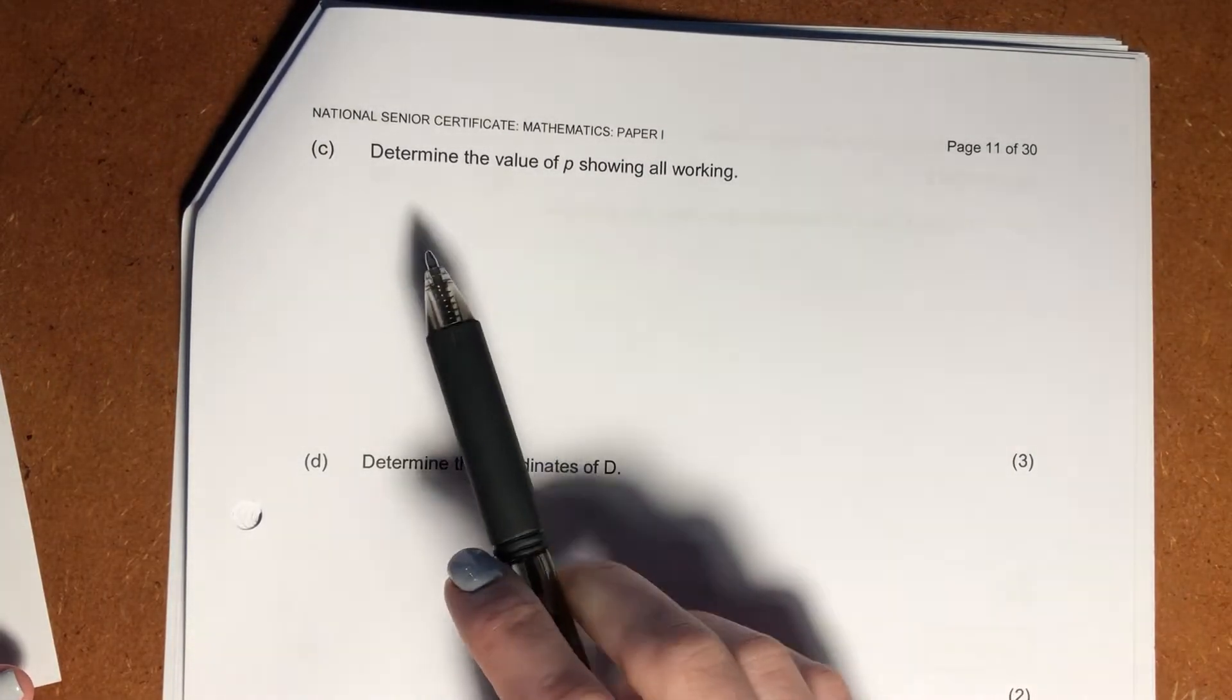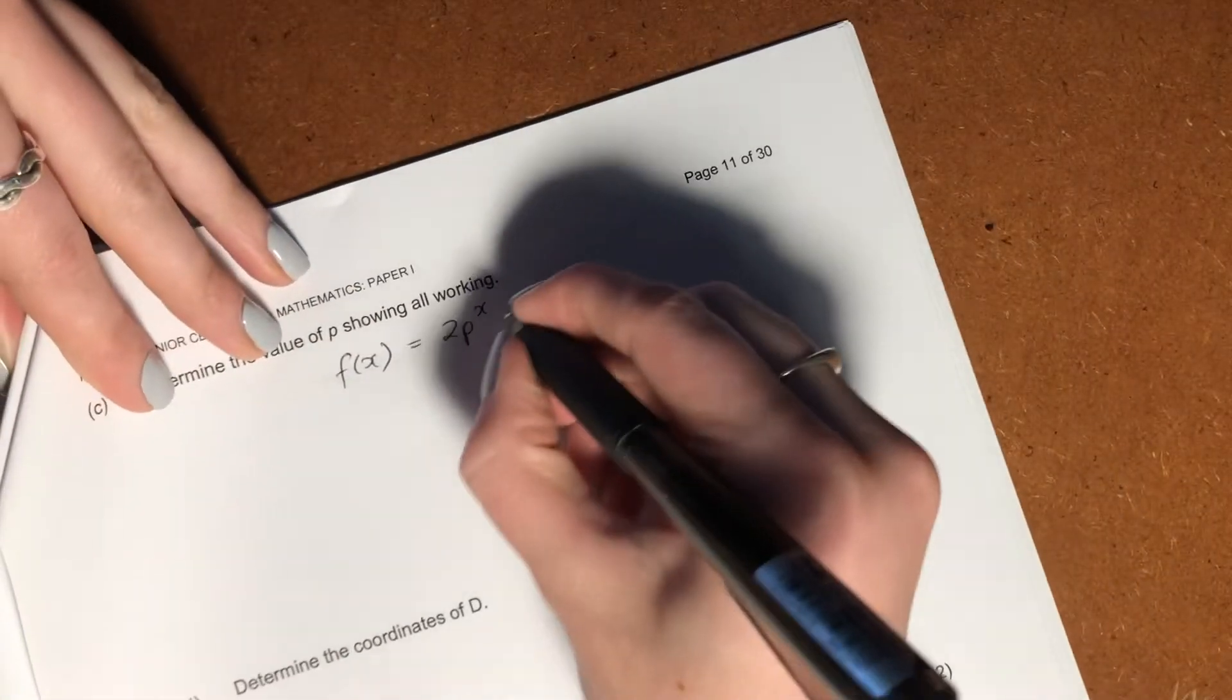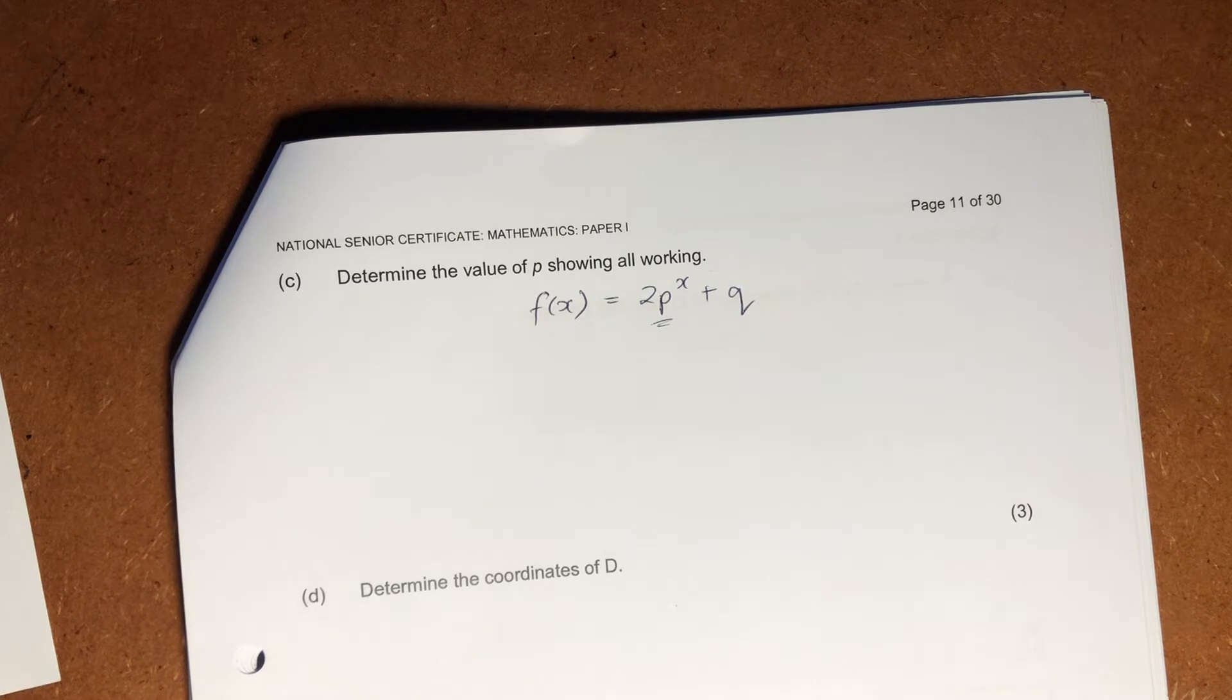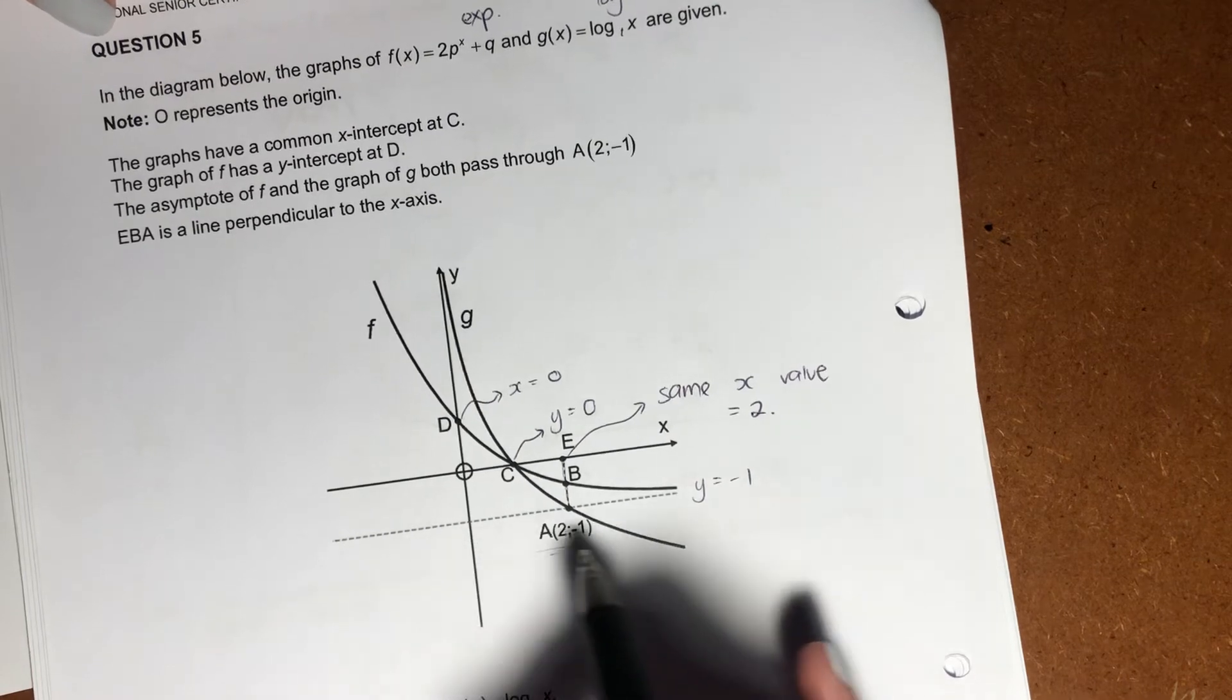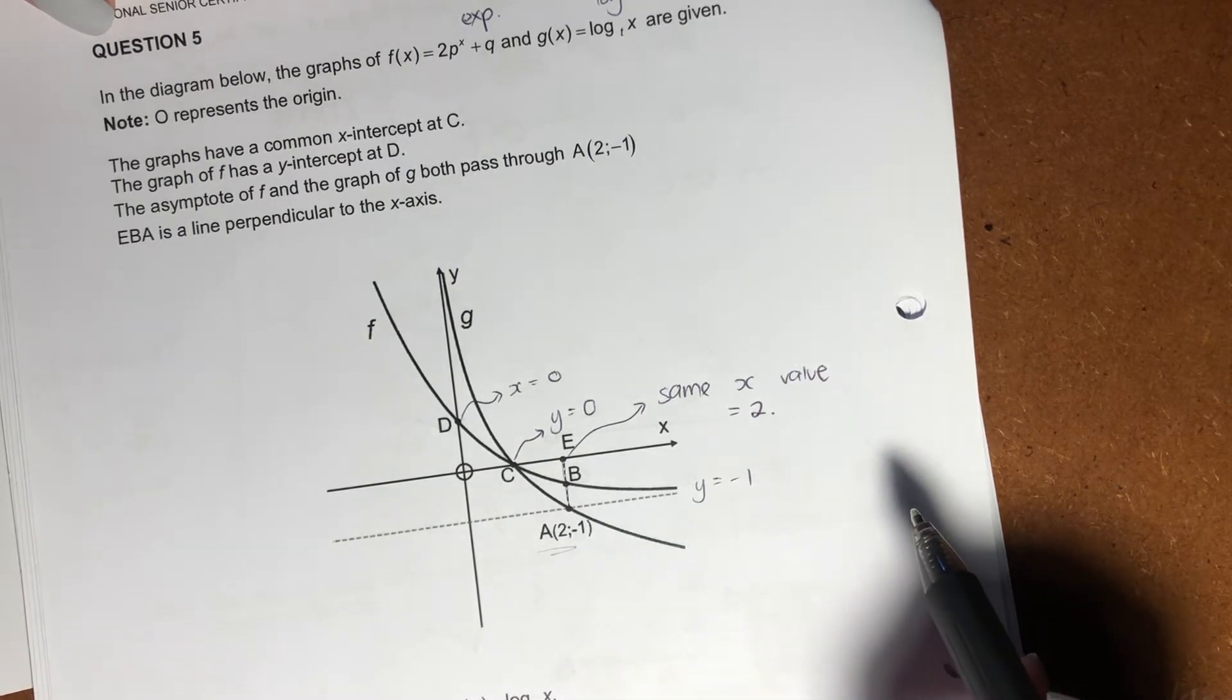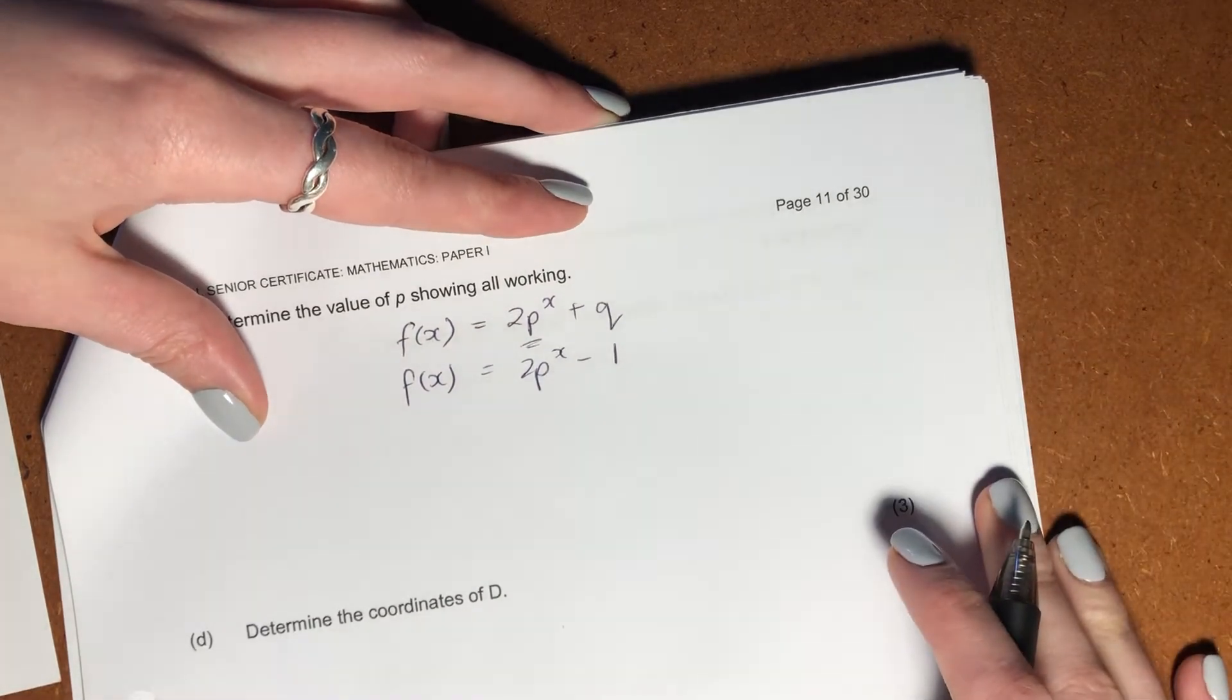So now, as expected, it says determine the value of p showing or working out. What's a bit tricky here is you have to keep flipping. So what I would do is I would just write f(x) out like this, so that we have it, so that we're not continually flipping around because it's a bit irritating, to be honest. So we're finding p. Now, what's interesting here is to find p, we actually need to find q. But q is not difficult, because q is just our asymptote. We identify our asymptote up front. We set it as y equals negative 1. How do we know that? It gave us a point on the line. We know that a line drawn through a y value is going to have the same y value across that line, this horizontal line. So we know that f(x) is going to equal 2p to the x minus 1. So we have q already.